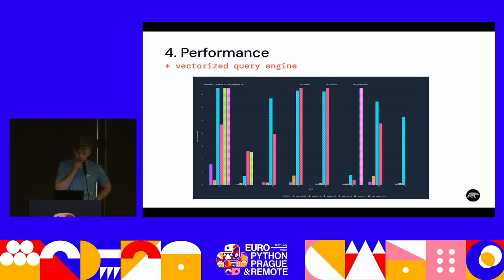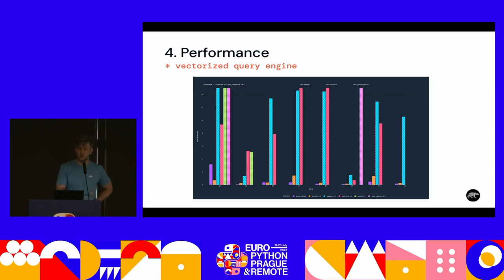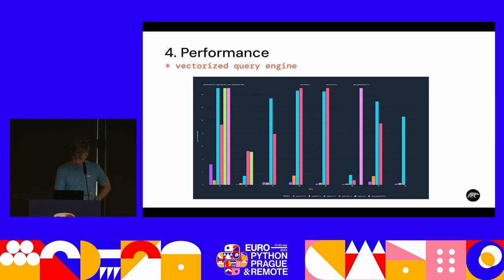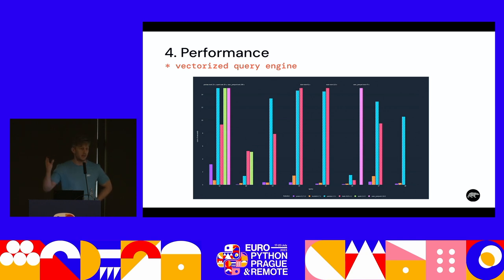Just some benchmarks — these are the TPCH benchmarks, which are made for databases specifically. You can see Polars is on the left and is the fastest on almost all queries except the first one, which is because we don't yet apply the common subexpression elimination optimization — once that PR is merged, we'll be faster. The other tools shown include DuckDB, Dask, and Spark. Polars is in a whole other level.